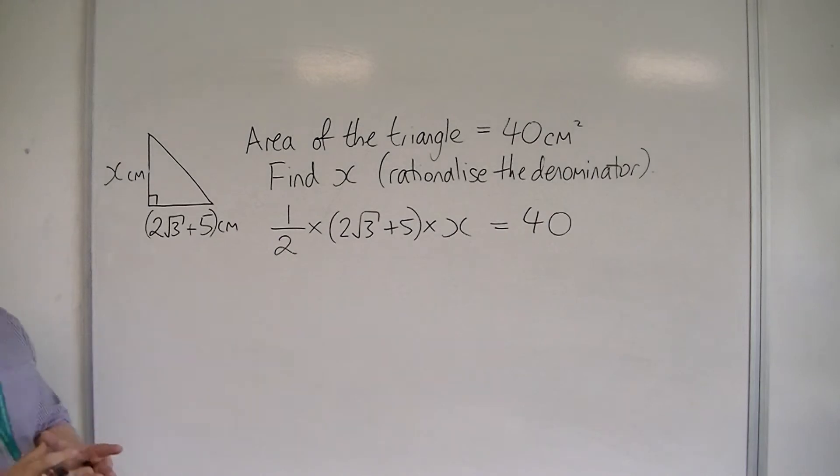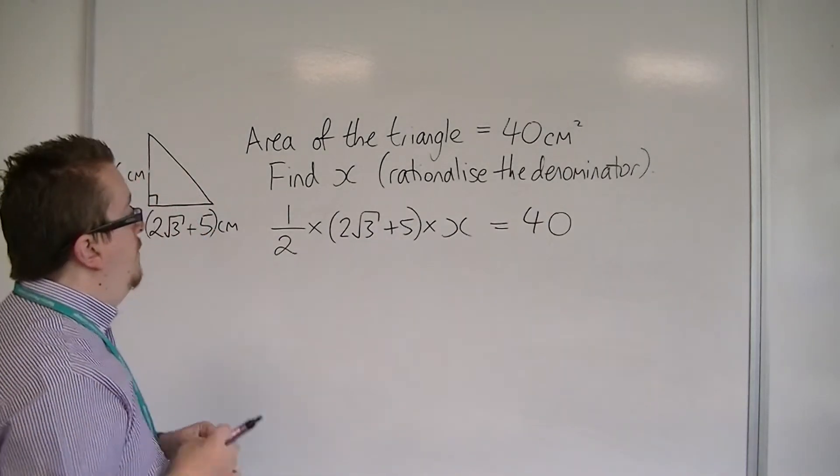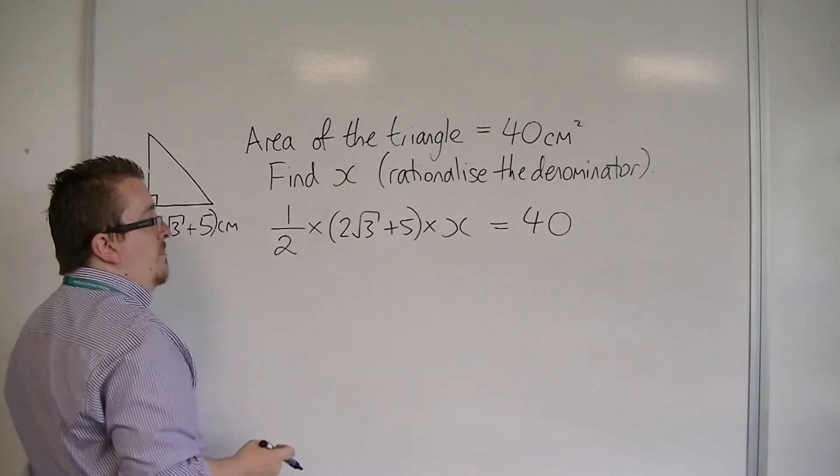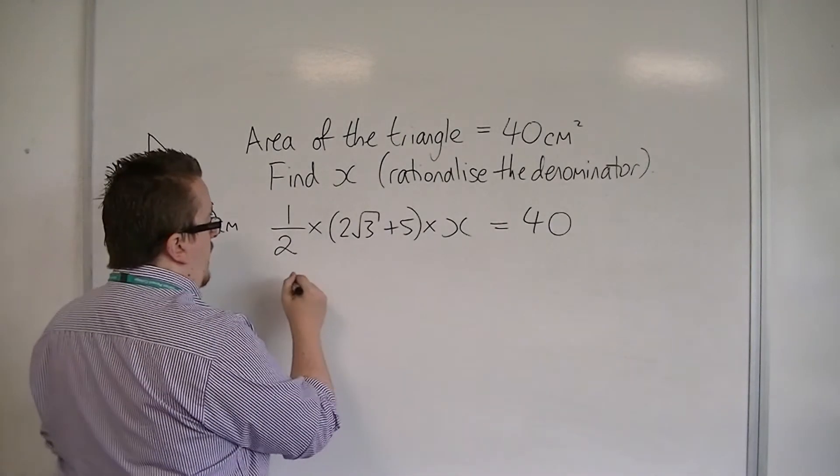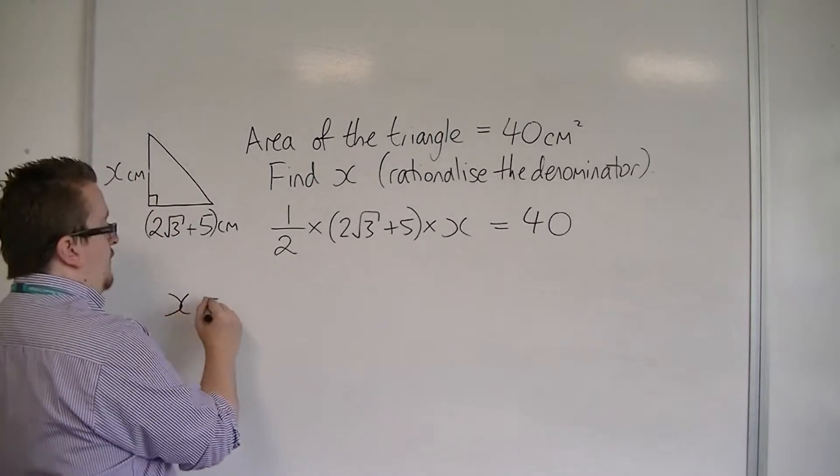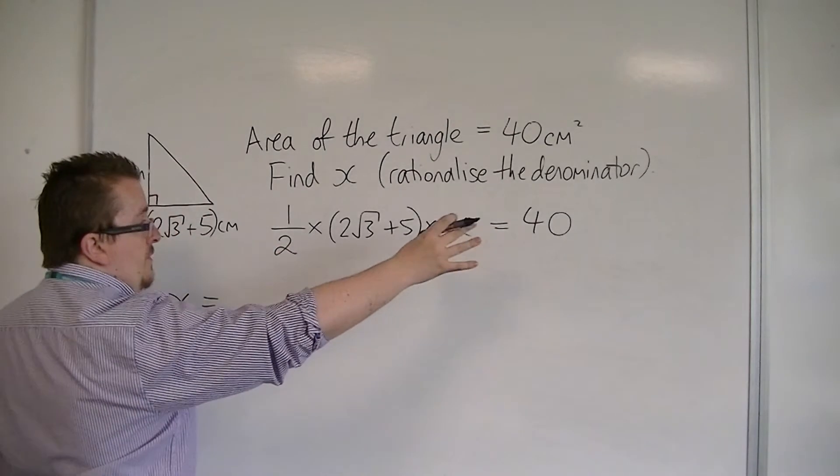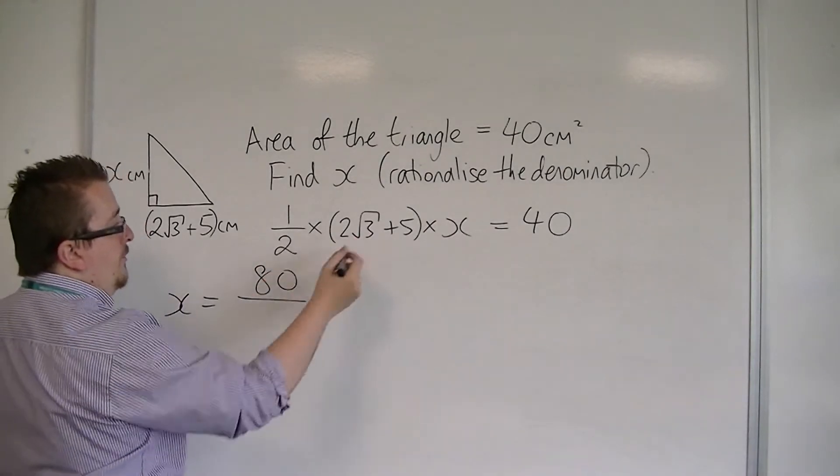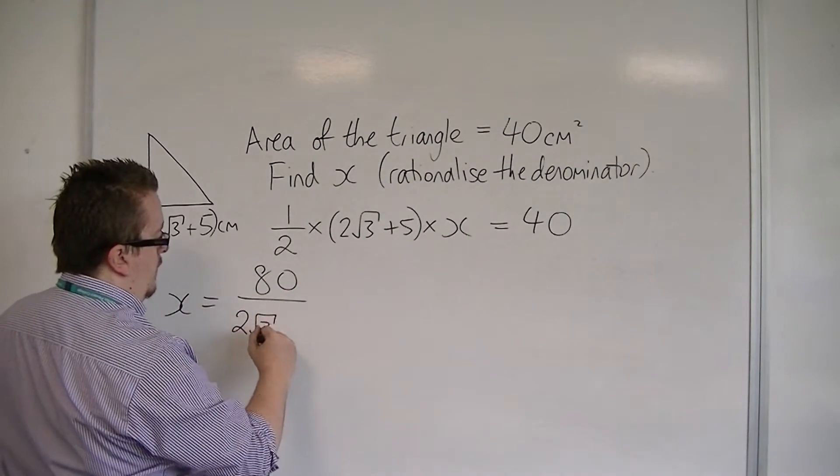If I multiply both sides by 2, and then divide both sides by 2 root 3 plus 5, what I'm going to get is that x is equal to 80, because I've multiplied both sides by 2, all over 2 root 3 plus 5.